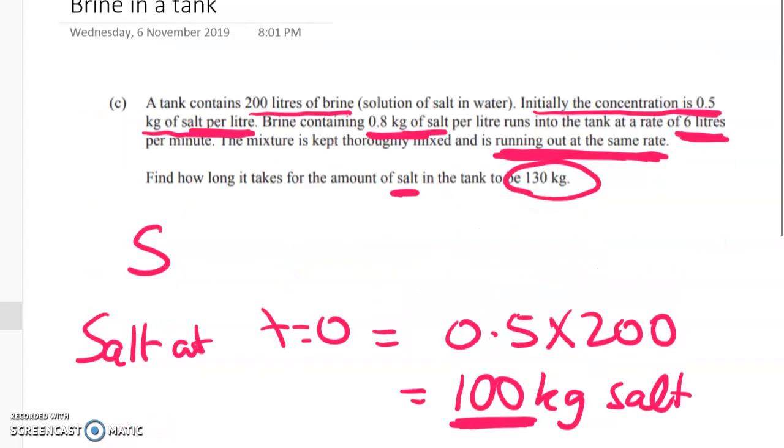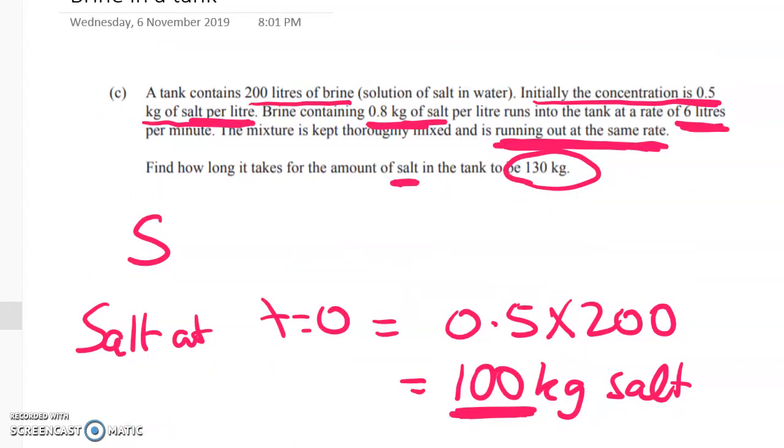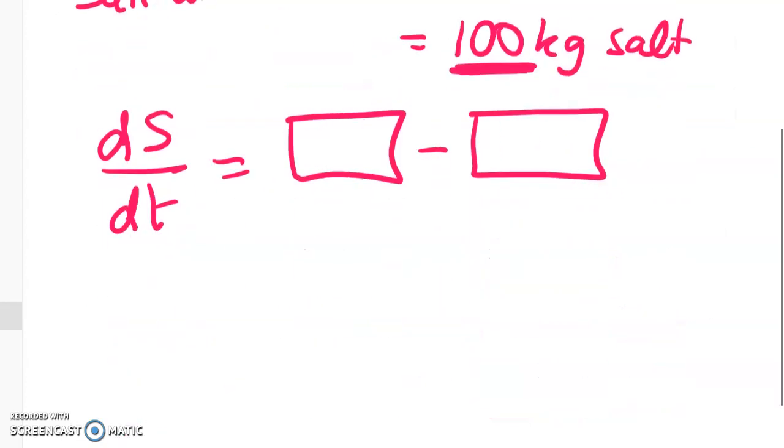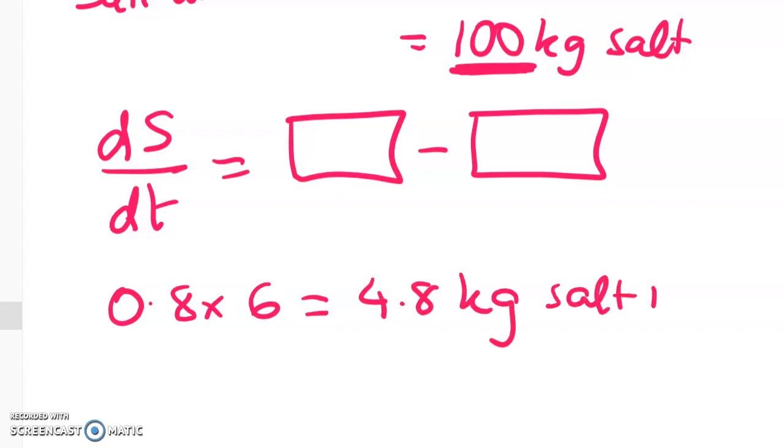Now, the salt coming in is pretty easy, because we're told that the rate of inflow is 6 litres per minute, lots and lots of underlining tonight, and the concentration is 0.8 kilograms per litre, right? So 0.8 times 6 is equal to 4.8. So there's 4.8 kilograms of salt coming in per minute, right?